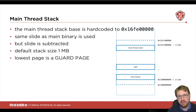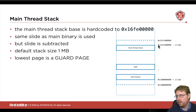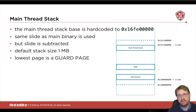We now have the main binary, dynamic linker, and the big shared cache. The remaining question is where the main thread stack is located. There is a hardcoded address in the kernel — 0x16FE50000 — which is the base address of the stack. The kernel takes the same slide as the main binary and subtracts it from this base, so the stack goes back by that many bytes in the same way the main binary went upwards. The default stack size is one megabyte, and the lowest page is made into a guard page so that a stack overflow will automatically trigger an exception on overrun.